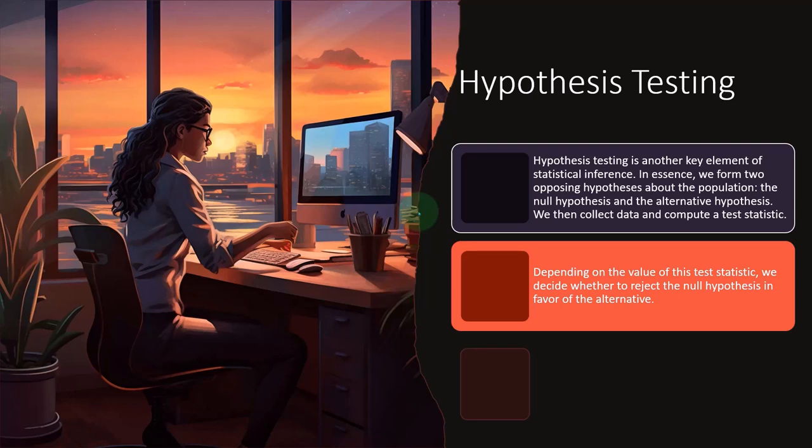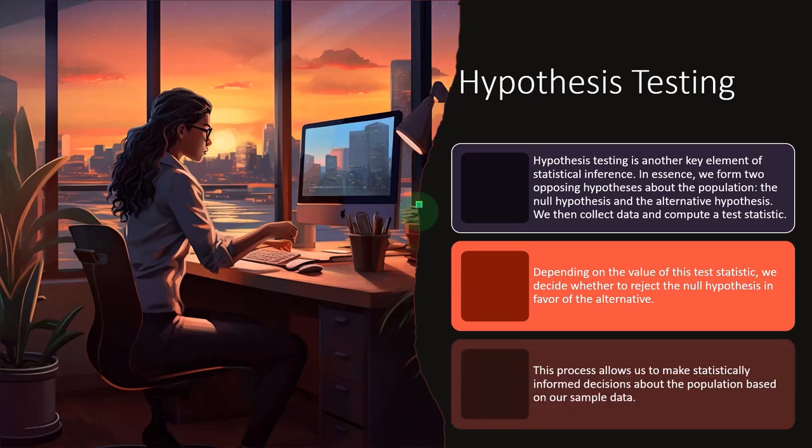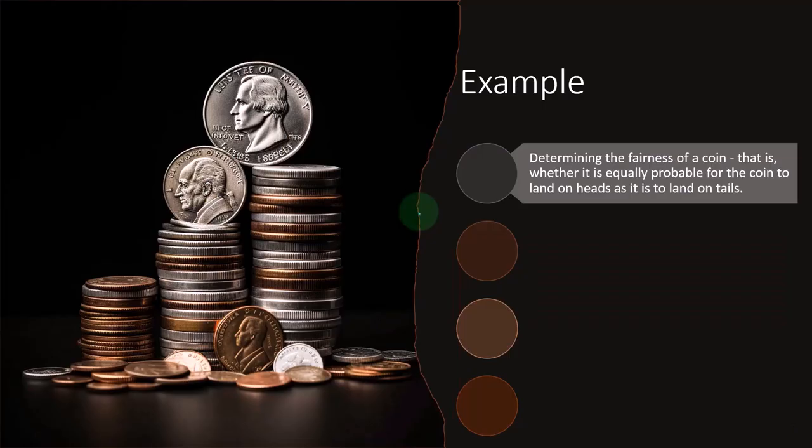Depending on the value of this test statistic, we decide whether to reject the null hypothesis in favor of the alternative. This process allows us to make statistically informed decisions about the population based on our sample data. Let's take a look at an example.